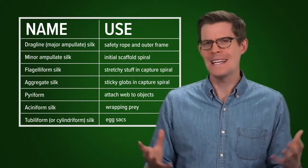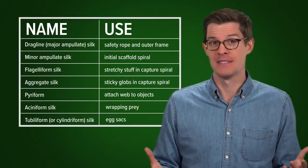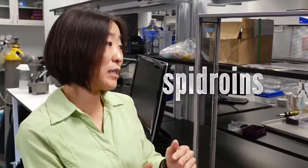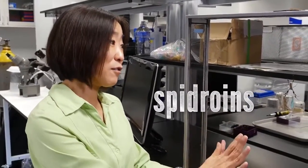So what exactly is this stuff? Spider silk is made of proteins, and the dominant proteins inside a silk fiber are these specialized category of proteins called spidroins, which stands for spider fibroins, that are unique to spiders.